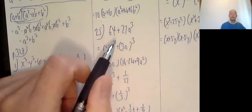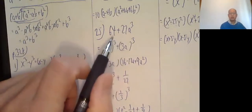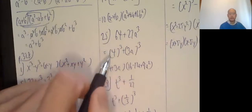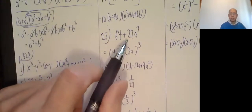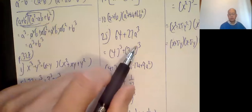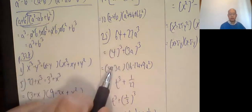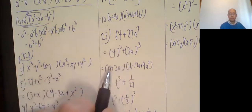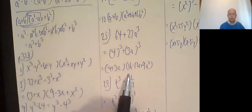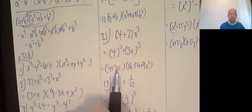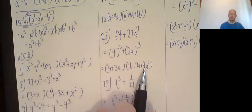25. 64 plus 27a cubed. Write it as the sum of cubes. 64 is 4 cubed. 27 is 3a cubed. Go into the formula. 4 plus 3a. 4 squared, 16, minus the product of these, that times that, 12a, plus 3a squared, 9a squared.